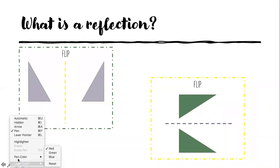A reflection is a flip of a figure. I'm either flipping it across the y-axis or across the x-axis. Mirror images don't look exactly the same — if I hold up both hands, the pinkies are on different sides. So if I reflect across the y-axis they're facing each other, and if I reflect across the x-axis this is how they would look.